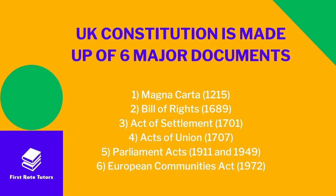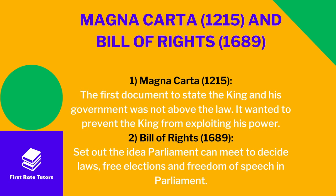These six documents are: the Magna Carta, created in 1215; the Bill of Rights, created in 1689; the Act of Settlement in 1701; the Acts of Union in 1707; the Parliament Acts — two separate acts in 1911 and 1949; and finally the European Communities Act in 1972. Let's have a look at each of them starting with the Magna Carta in 1215.